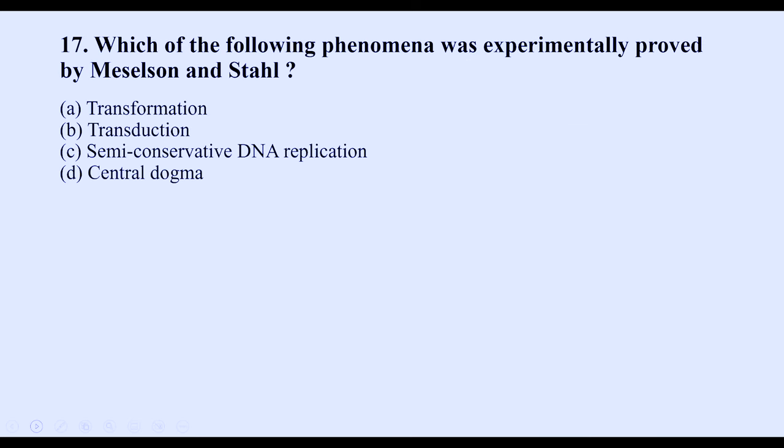The next question asks what was experimentally proved by Meselson and Stahl. Whenever the names Meselson and Stahl appear, the answer is semi-conservative DNA replication.